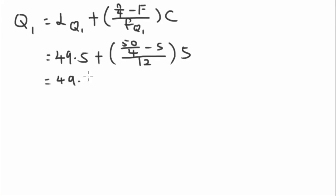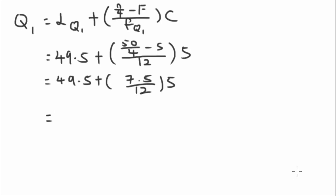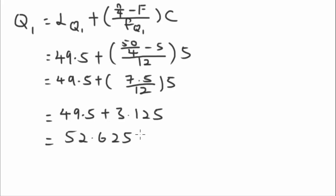Calculating Q1: 49.5 + [(12.5 − 5) / 12] × 5 = 49.5 + [7.5/12] × 5 = 49.5 + 3.125 = 52.625. So Q1 = 52.625.